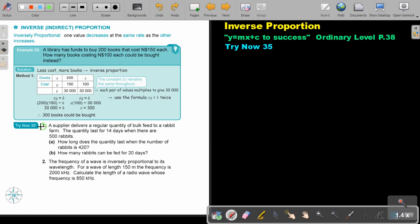A supplier delivers a regular quantity of bulk feed to a rabbit farm. The quantity lasts for 14 days when there are 500 rabbits. How long does the quantity last when the number of rabbits is 420? Remember, they're going to give the rabbits exactly the same amount of food every day. So if there's less rabbits, the food is going to last longer. So rabbits go down, days of food go up in inverse proportion.